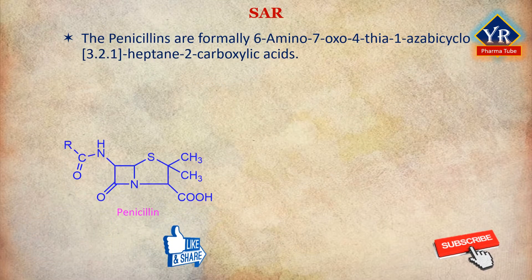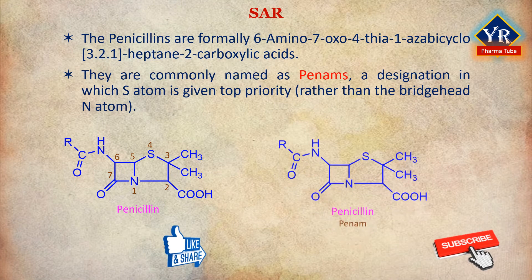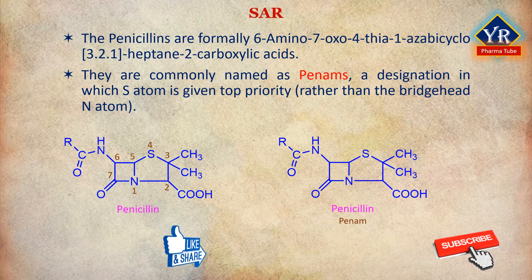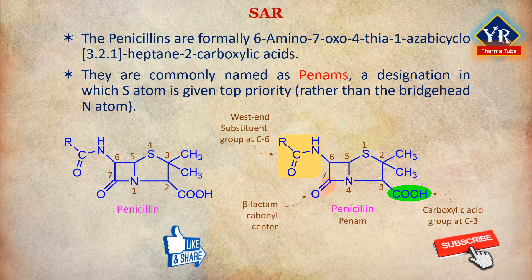The penicillins are formally 6-amino, 7-oxo, 4-thia, 1-azabicyclo-[3.2.1]-heptane 2-carboxylic acids, but are commonly named as penams — a designation in which the sulfur atom is given top priority rather than the bridgehead nitrogen atom. Other beta-lactam antibacterials are named using similar common designations; cephalosporins are named as cephems. Using this nomenclature, the penicillins have the prerequisite carboxylic acid group placed at the C3 position. The acyl side-chain substituent is joined to the C6 center, which is aminated and is usually substituted via monoacylation, thus constituting a variety of C6 acylamido substituents. The beta-lactam carbonyl center is located at position 7, and the C2 center contains the geminal dimethyl substitution characteristic of the penicillins.